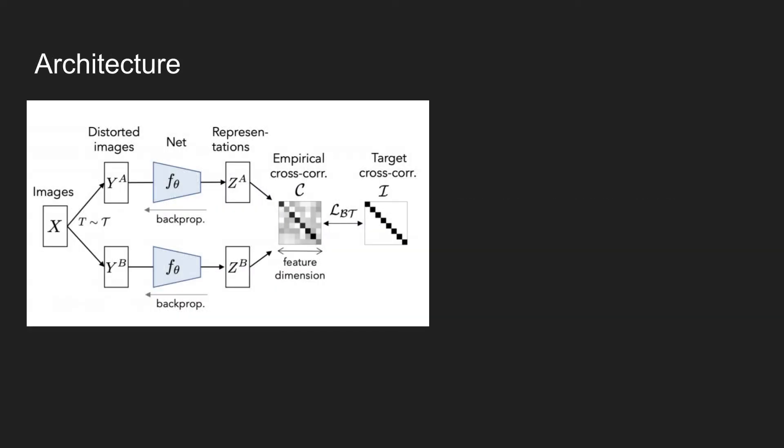The figure shows the overall architecture of the Barlow Twins. First, there are two identical networks. This is represented in the figure as F.